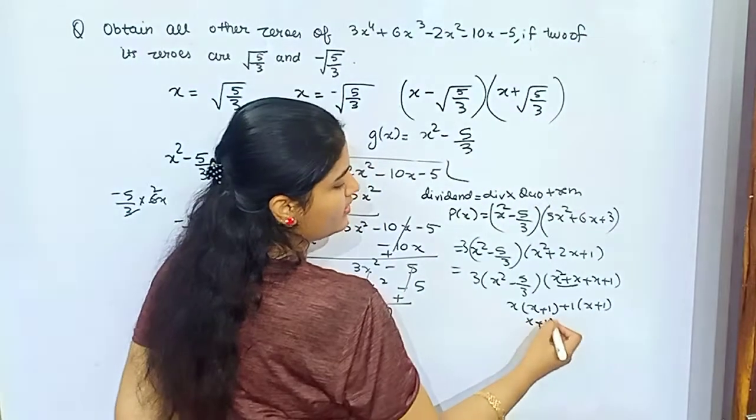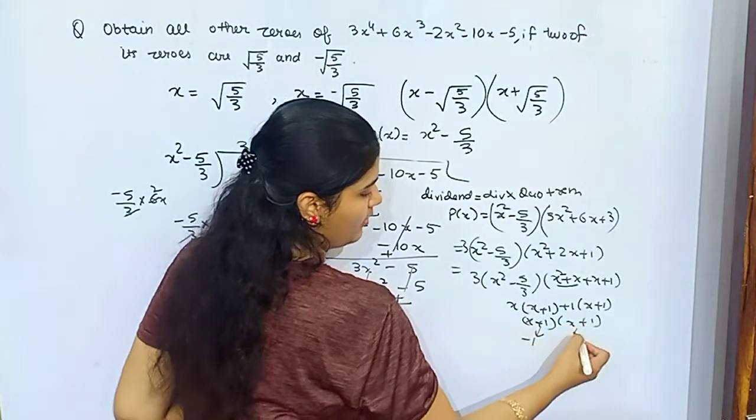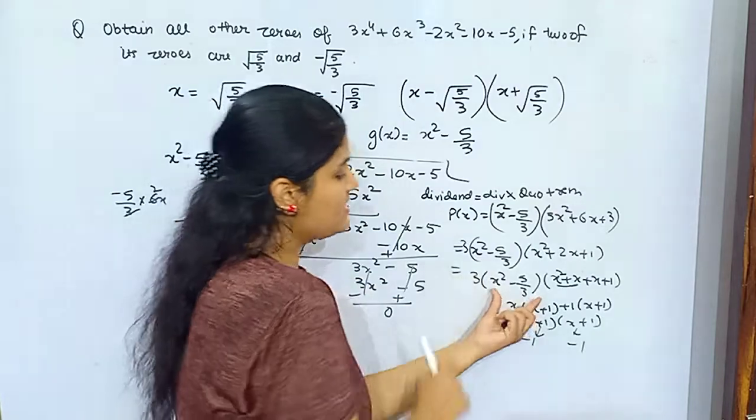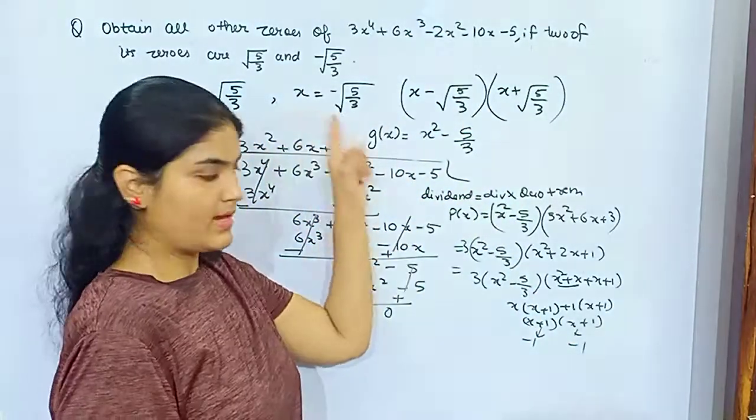So your two roots are from here: -1 from here, -1. From this form you have already got √5/3 and -√5/3, right?